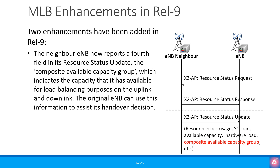Even though this was a Release 8 feature, two new enhancements were added in Release 9. The first is that the neighbor eNodeB now reports a fourth field in its resource status update — the composite available capacity group — which indicates the capacity available for load balancing purposes on the uplink and downlink. The original eNodeB can use this information to assist its handover decision.